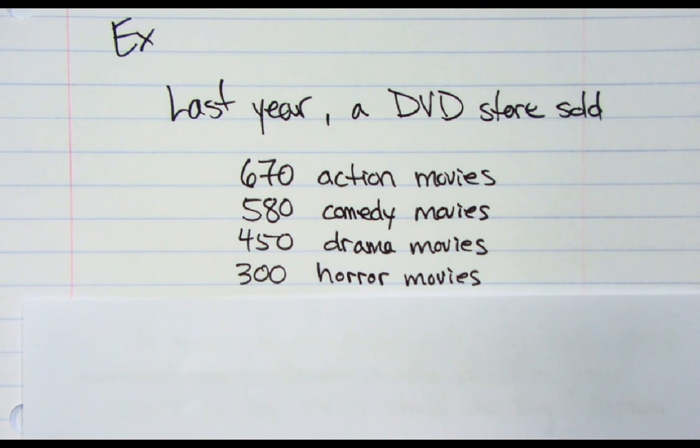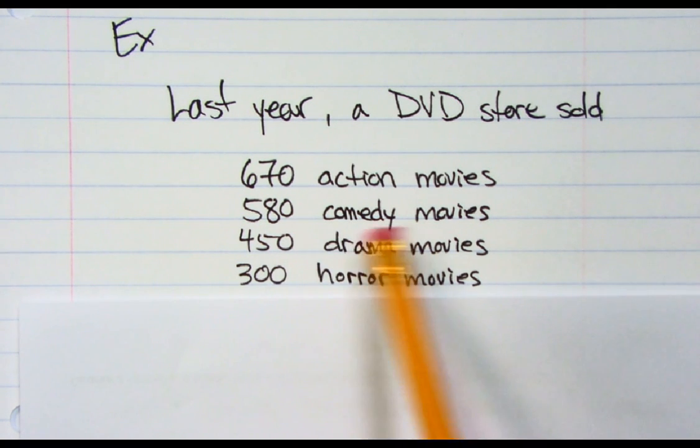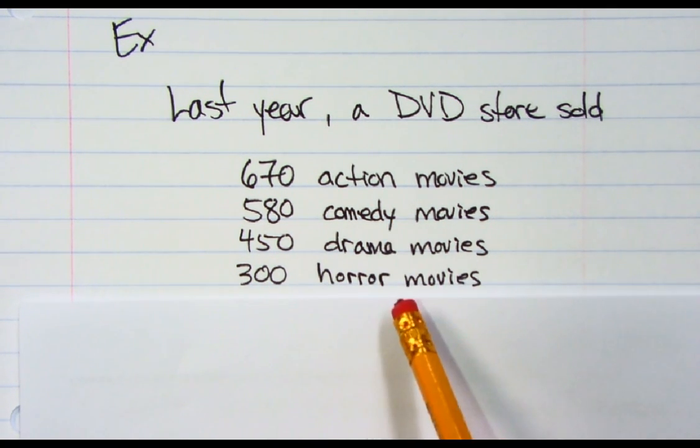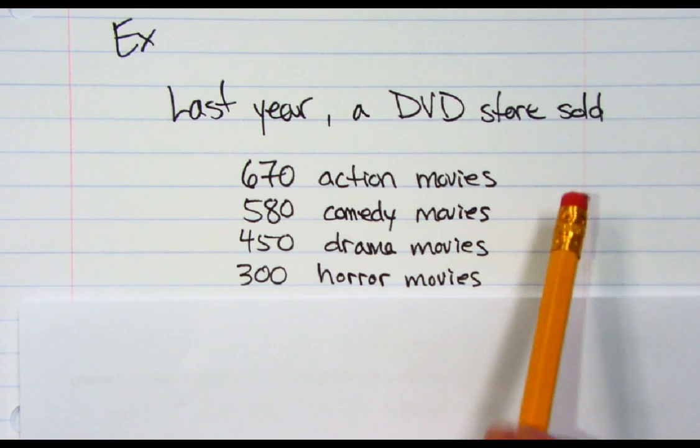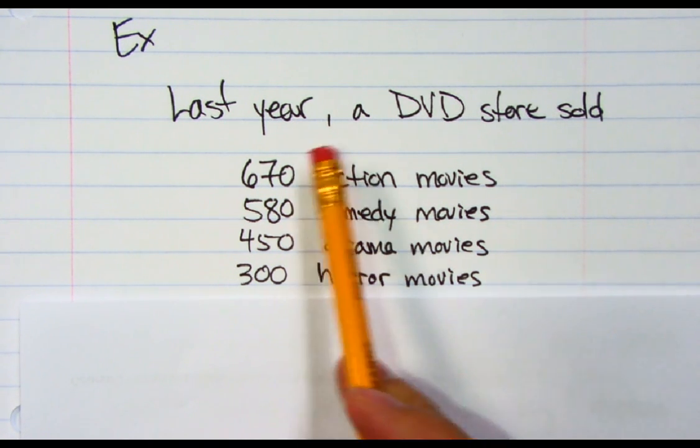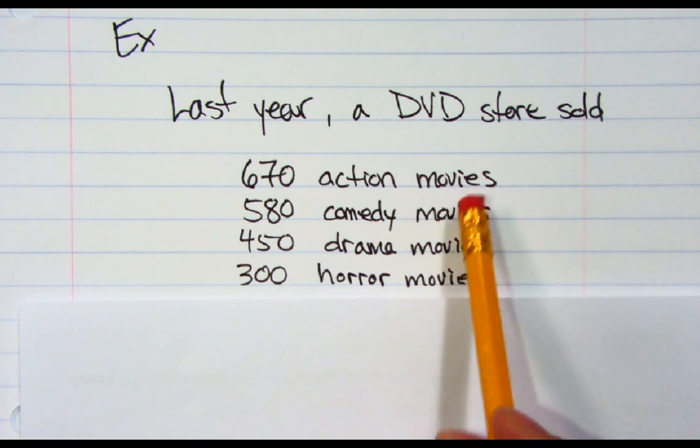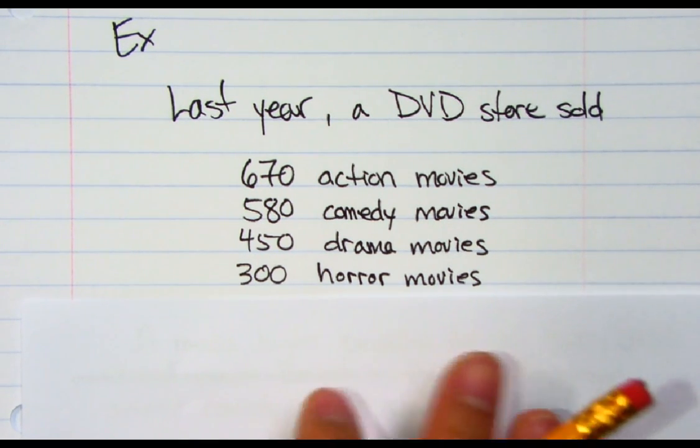Last year, a DVD store sold 670 action movies, 580 comedy, 450 drama, and 300 horror movies. This is actually very practical. If you own a business or work for a company that sells things, you can look at what they did last year and that can help you predict what you're going to do for future years.